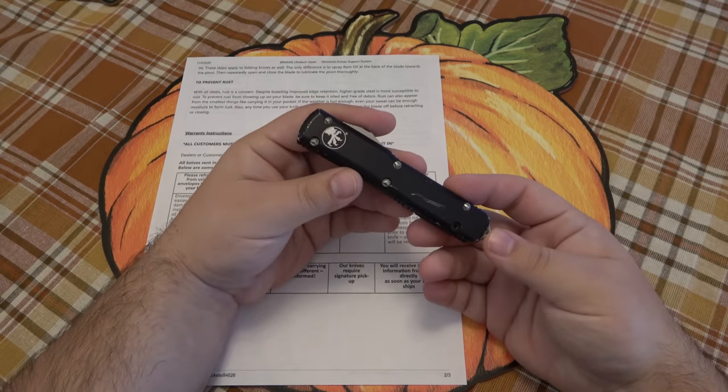In that case, they might charge you for shipping a second time. I don't really know for sure about charging you, but I can see some problems arising there. And the last section here, you will receive tracking information from UPS directly as soon as your knife ships. So, again, going back to being available when your knife ships out, you should be checking your emails or whatever. Once you have the information that they're going to ship it back, make sure you're home so you can sign for that or someone is at your residence so they can sign for you.